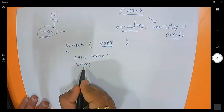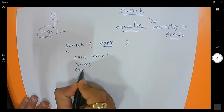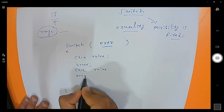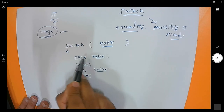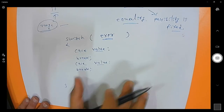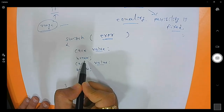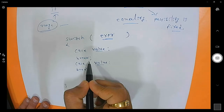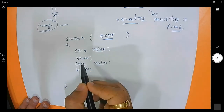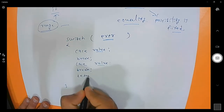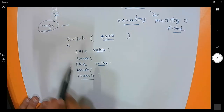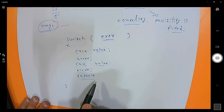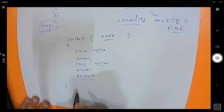If you do not write a break, the next case will also be executed. Remember: you cannot write duplicate case values — each case value must be unique. The break statement is optional; if you skip it, all subsequent cases will be executed once a match is found. You can write a default case for when no case matches, similar to the else in an if statement. If default is the last case, no break is needed since the switch will already end.